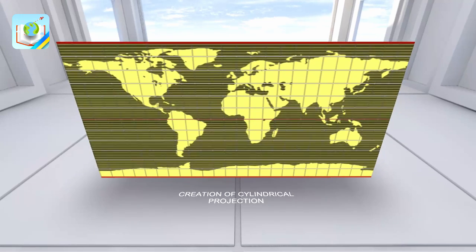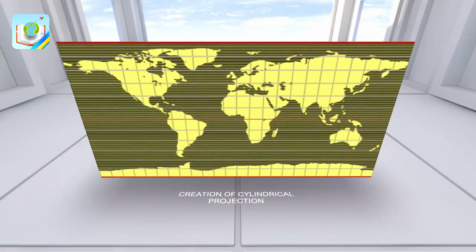At the equator, there is no image distortion, and the farther from it, the greater the distortion.